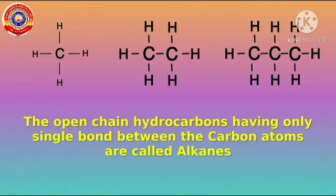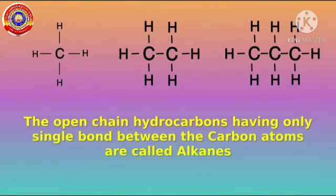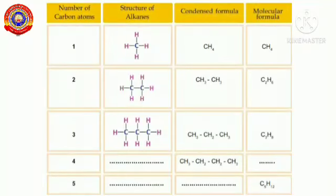Now compare the three structures we discussed. Haven't you noticed that single bonds exist between all the carbon atoms? The open chain hydrocarbons having only single bonds between the carbon atoms are called alkanes. In alkanes, as all four valencies of each carbon atom are satisfied by single bonds, they are known as saturated hydrocarbons. Remember: alkanes are hydrocarbons with only single bonds between the carbon atoms.